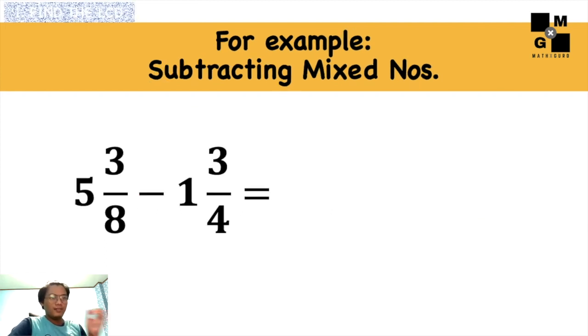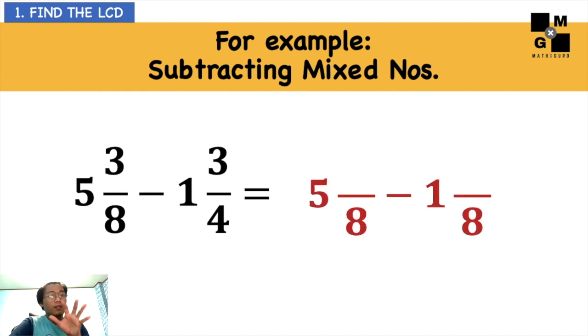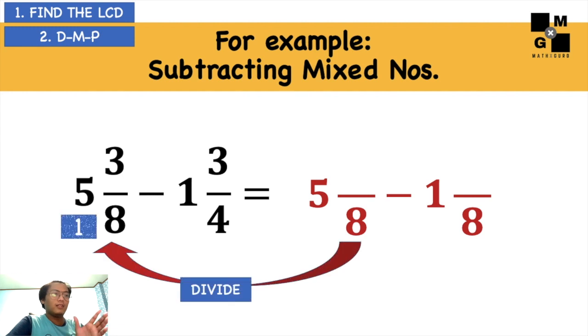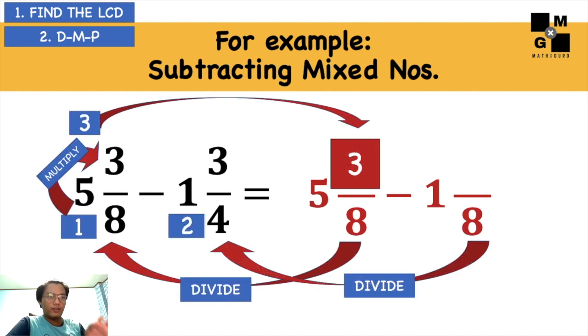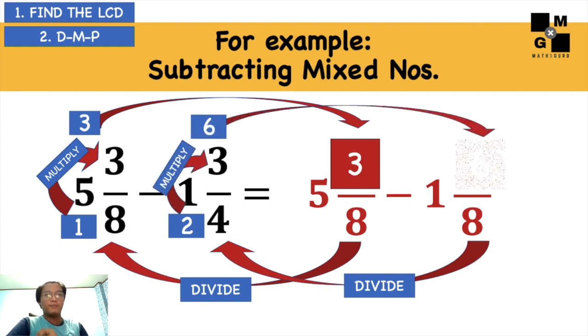Last one. So easy. Find the LCD. We'll have 8, and put 5 and 1 for the whole number. 8 divided by 8 is 1. 1 times 3 is 3, and put 3 there. 8 divided by 4 is 2. 2 times 3 is 6, and then put 6 in.